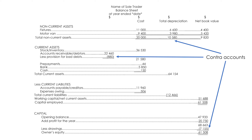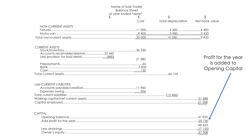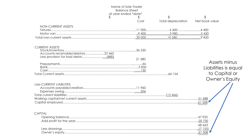Total of provision for depreciation for last year and this year for all fixed assets — contra accounts. Closing stock is a current asset. Profit for the year is added to opening capital. Assets minus liabilities equals capital or owner's equity.